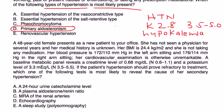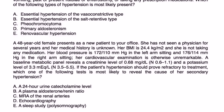Next question. A 48-year-old female presents as a new patient to your office. She has not seen a physician for several years, and her medical history is unknown. Her BMI is 24. She is not taking any medications. Blood pressure is 172 over 110 in the left arm sitting, and 176 over 114 in the right arm sitting. Cardiovascular exam is otherwise unremarkable.